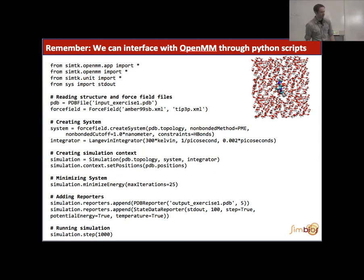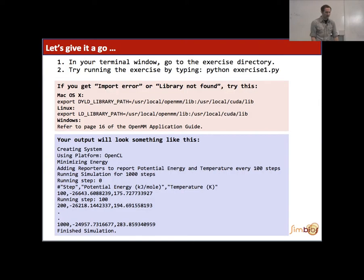And then you can open that in a molecular viewer like VMD or PyMOL or whichever you prefer. Here we will do it with VMD. So in your terminal window, go to the exercise directory and try running the exercise by typing Python exercise1.py and see what happens. You might get an error and it might look something like this. That means that you haven't exported the paths on your system. So if you see any of these errors, raise your hand and we'll stop, otherwise we'll move on.